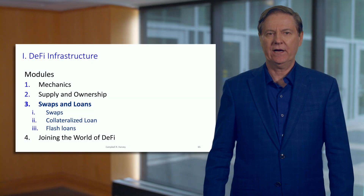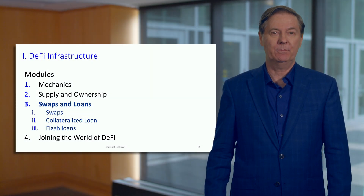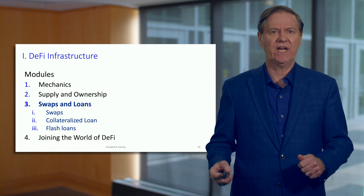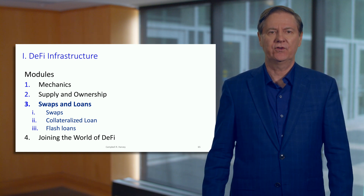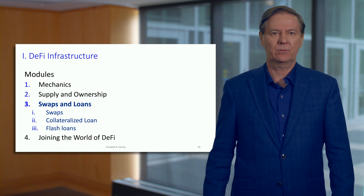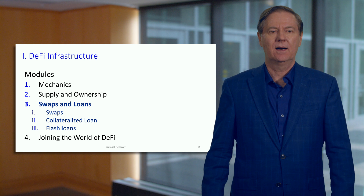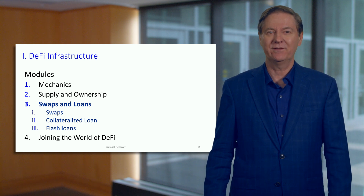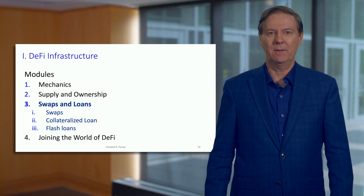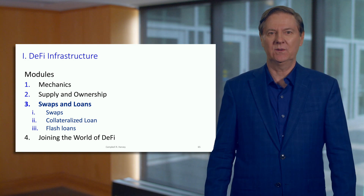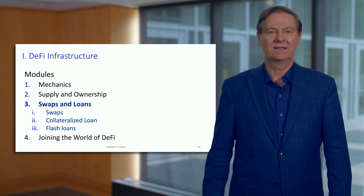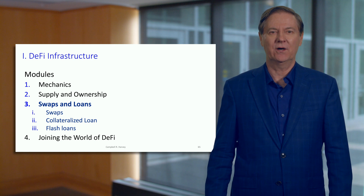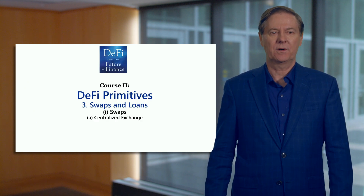The third module covers swaps and loans. A swap is an exchange of one token for another. We'll talk about collateralized loans, which we've already touched on, and then flash loans, which I've mentioned a number of times and may seem mysterious — we'll cover all of it in this module.